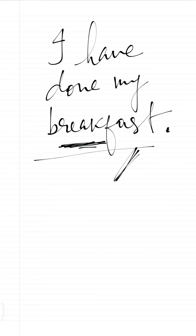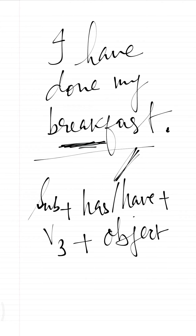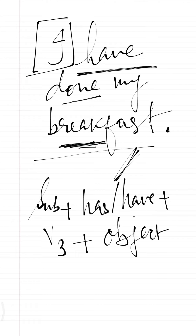The formula for present perfect tense is: Subject + has/have + Verb (third form) + Object. In the example 'I have done my breakfast,' 'I' is the subject, 'have' is used, 'done' is the third form or past participle of 'do,' and 'my breakfast' is the object. Based on the formula we can form the sentence.